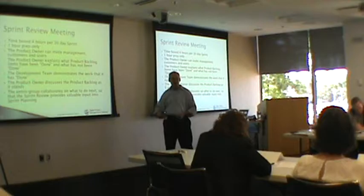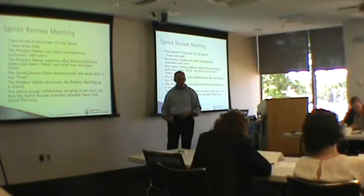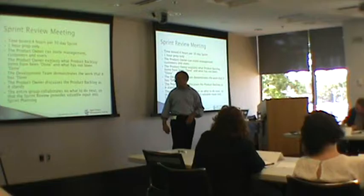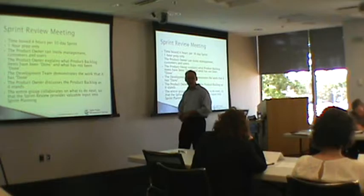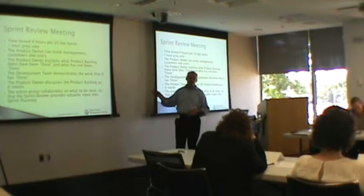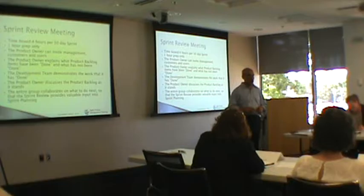The product owner discusses where the overall backlog is. If they're working on a release plan, they say this iteration was part of the overall release, or part of the overall vision. The entire group collaborates on what to do next. This is an opportunity to have your stakeholders there — tell them what you've built, tell them what you're going to build. Is there anything that needs to be included in the next sprint planning? Because this meeting is right before the sprint planning meeting, either the same day or the following day.